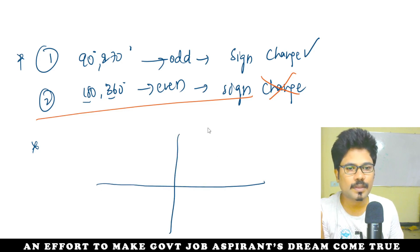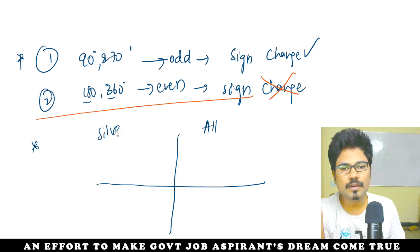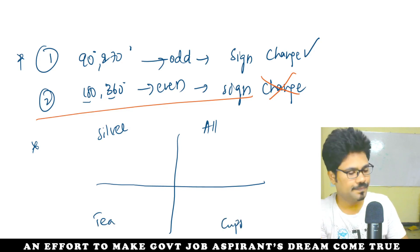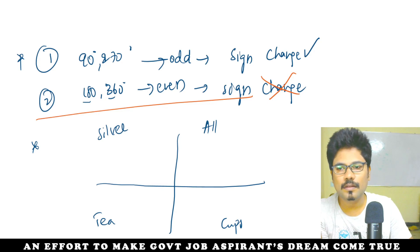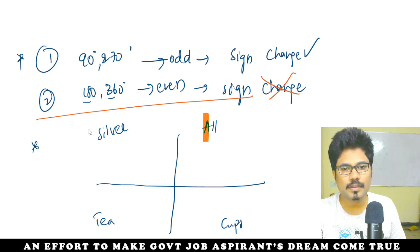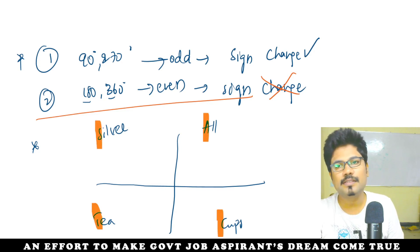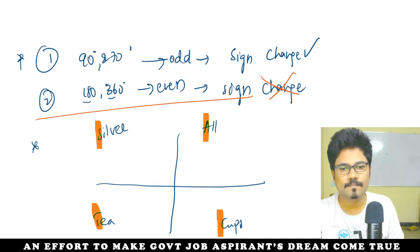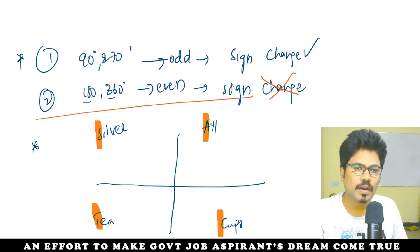All Silver Tea Cups — this is the mnemonic. In the first quadrant, All functions (sin, cos, sec, etc.) are positive — that is 'A'. In the second quadrant, only Sin and its inverse cosecant are positive — 'S'. In the third quadrant, Tan and cot are positive — 'T'. In the fourth quadrant, Cos and sec are positive — 'C'.